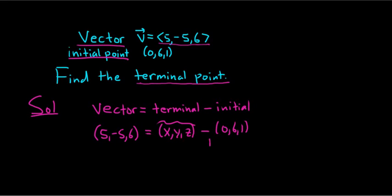Okay, now we just add this to both sides. So we do plus (0, 6, 1), plus (0, 6, 1). And we just add each of the components. So x, y, z. All we do is we add the components.